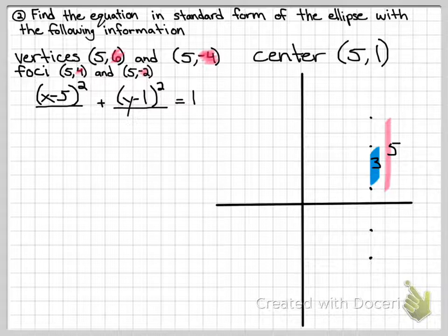I know how far it is from the center to the vertices, that vertical distance, and we know that that came from the number under y, that's our a squared, it comes from a squared. So if I go backwards and I square it, that means that y is over 25.